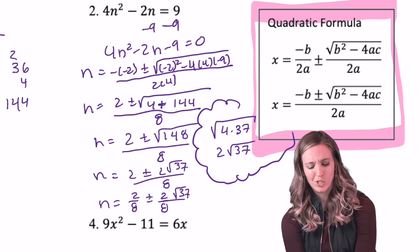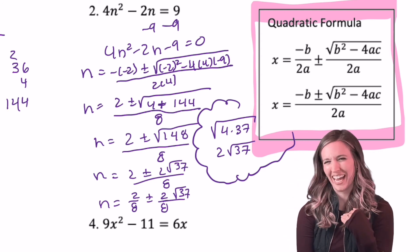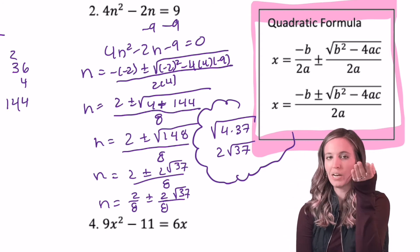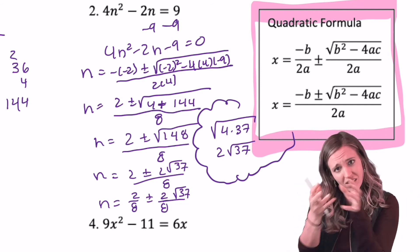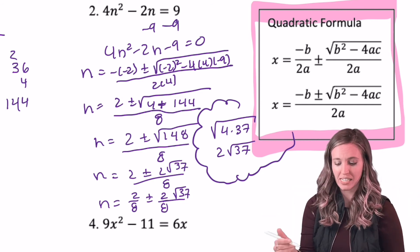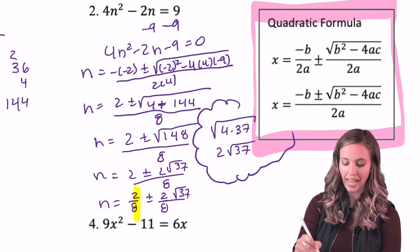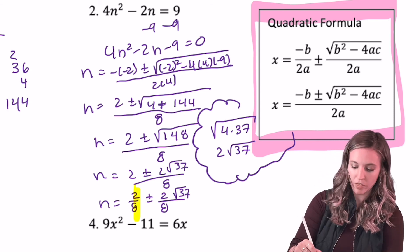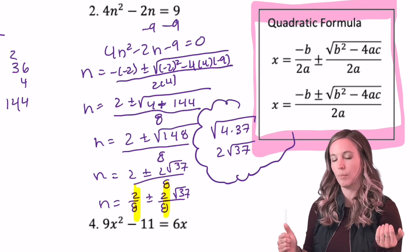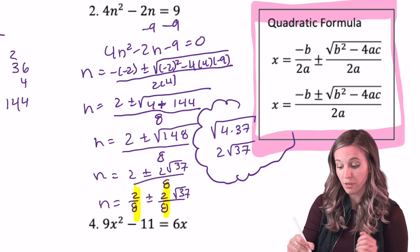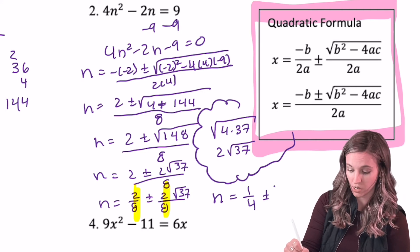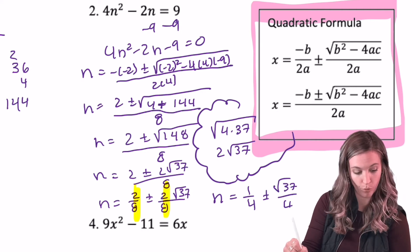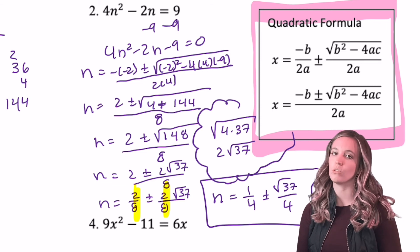All right, so I got n equals 2 plus or minus 2 root 37 all over 8. Now that was a little weird looking, so I went ahead and wrote my 2 over 8 and then my 2 root 37 over 8, right? Because that denominator's on both pieces, then I can see that 2 divided by 8 is going to simplify to 1/4th, and same with this right here. 2 divided by 8 can simplify to 1/4th. So my simplified answer is going to be 1/4th plus or minus root 37 over 4. Now remember that that's two solutions.